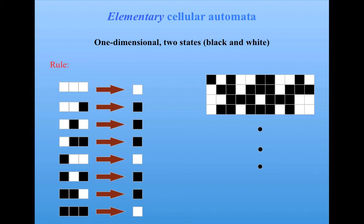On the face of it, elementary cellular automata are extremely simple. Each cell is either black or white, each cell communicates only with two neighbors, the system is completely deterministic.